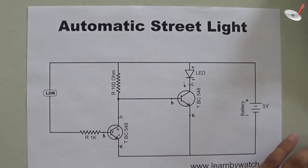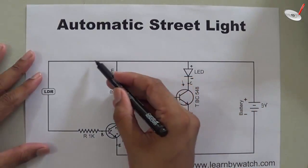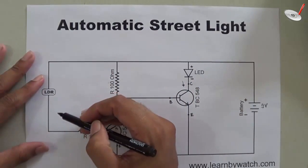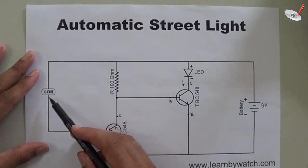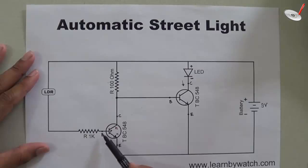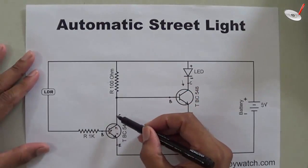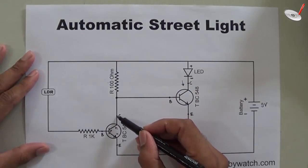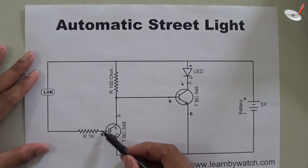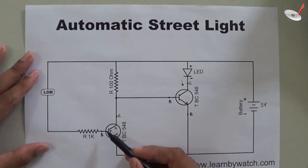Let's understand why the LED is not glowing when I connect the battery. The current goes through the LDR, which has very low resistance when light falls on it during daytime. So current will pass and the emitter junction will be forward biased because the voltage here will be approximately 0.7 volts. Looking at the collector terminal, this terminal has lower potential and this terminal has higher potential, so the collector junction is also forward biased.